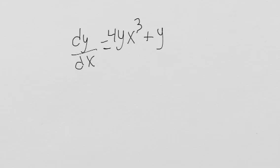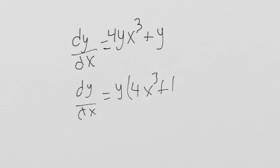In this separation of variables problem, the first thing we notice is that there is a y, there's two y's over here, and we can factor out a y. So we get y times 4x cubed plus 1.